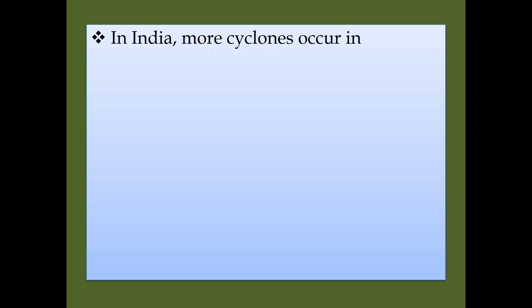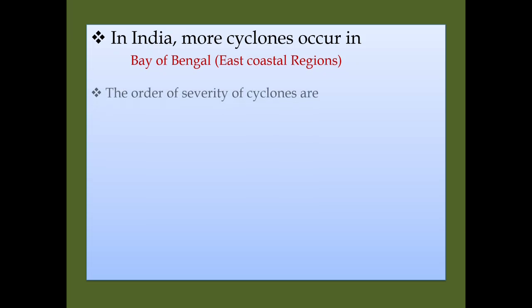Generally in India, more cyclones occur in the Bay of Bengal, that is the east coast region of India, than in the west coast region. The order of severity of cyclones can be classified into various stages: low pressure, depression,